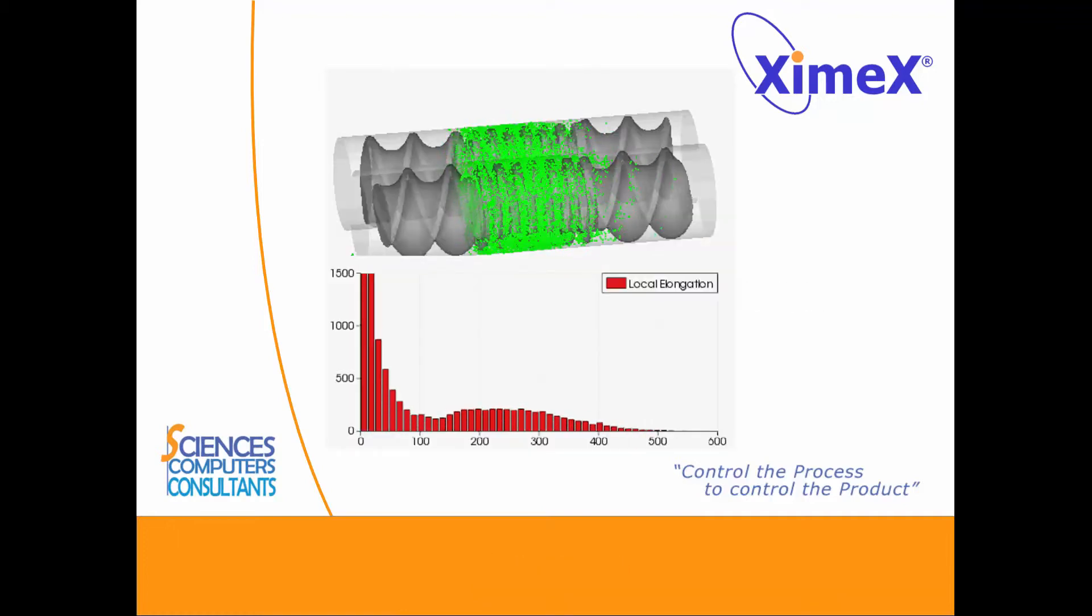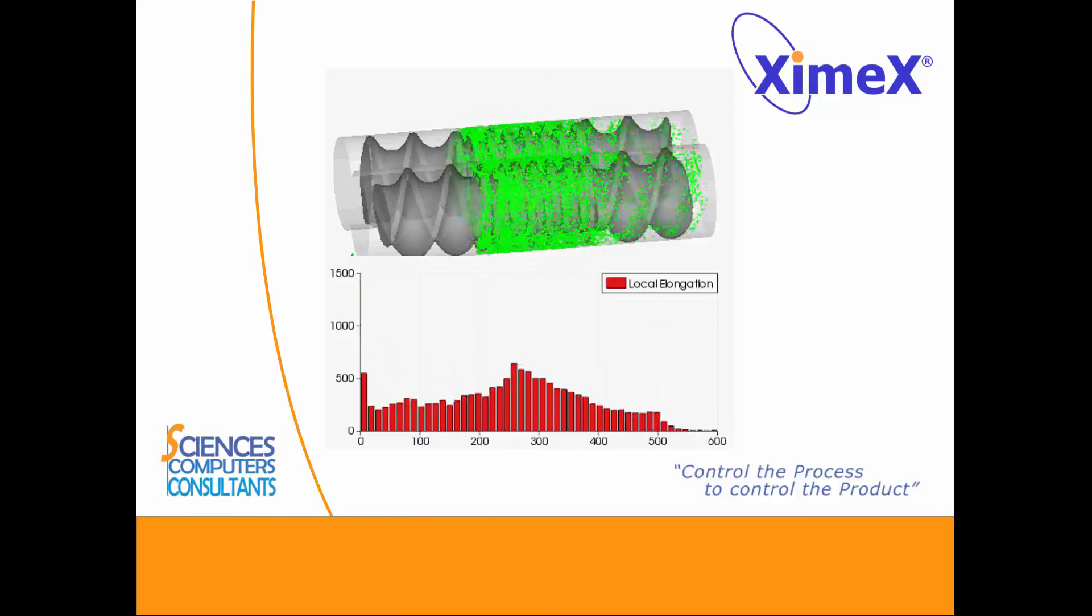Elongation is computed for each couple of particles. This is a marker for the distributive mixing.